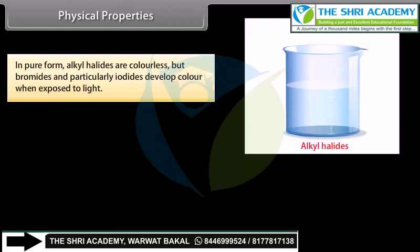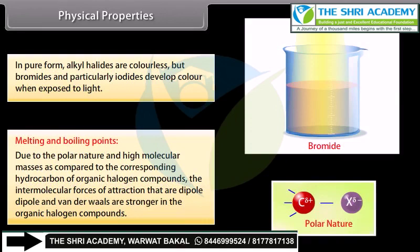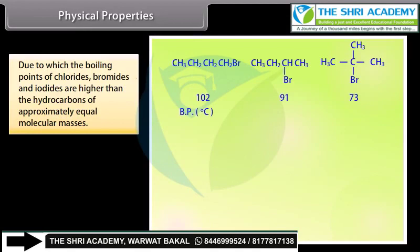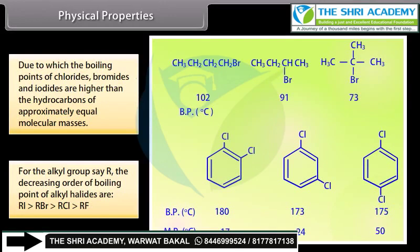Physical properties: in pure form, alkyl halides are colorless, but bromides and particularly iodides develop color when exposed to light. Due to their polar nature and high molecular masses, the intermolecular forces of attraction — dipole-dipole and van der Waals — are stronger in organic halogen compounds than in corresponding hydrocarbons. Therefore, the boiling points of chlorides, bromides, and iodides are higher than those of hydrocarbons of approximately equal molecular mass. For a given alkyl group R, the decreasing order of boiling points is: R-I > R-Br > R-Cl > R-F.